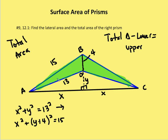First one is x squared plus y squared equals 13 squared, which we've changed to solve in terms of x squared. And the second one is x squared plus y plus 4 squared is equal to 15 squared.